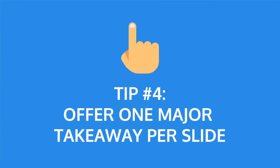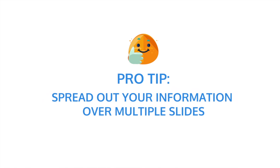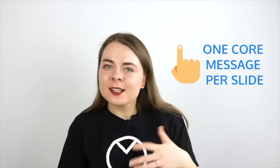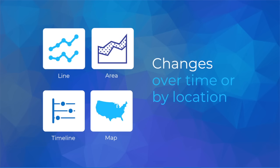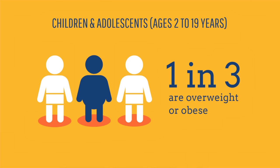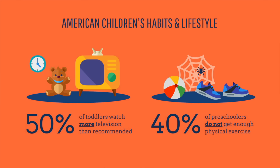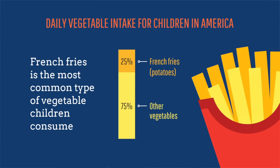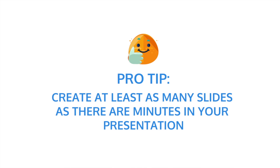Tip number four: offer one main takeaway per slide. Your audience will have trouble following slides that have too much information stuffed into them. Instead, spread out your information over multiple slides and dedicate only one main message to each. A trick is to pick one core message per slide and express it using just a few keywords. Pull out the most important statistics or numbers and make those the focus. This means you'll probably end up with a lot of slides — and that's perfectly okay. As a rule of thumb, you should create at least as many slides as there are minutes in your presentation.